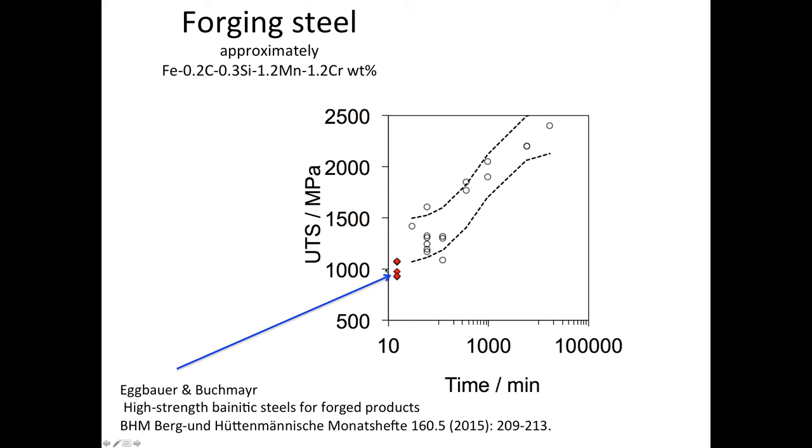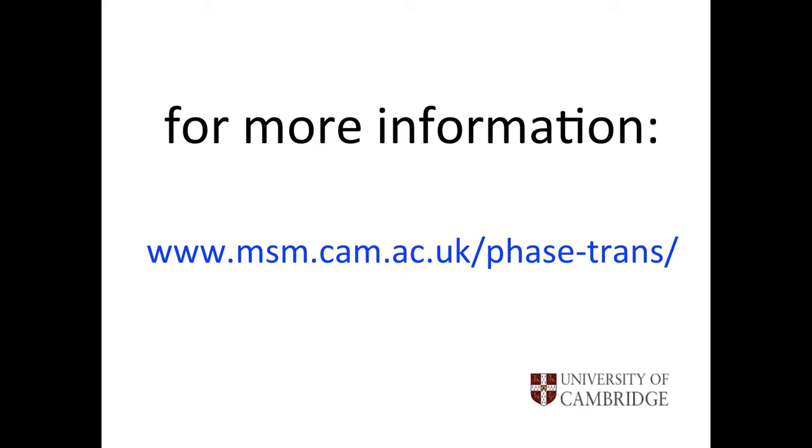So basically, when attempting to design a new TRIP-assisted steel or a steel consisting only of bainitic ferrite and retained austenite, curves of this kind can help you define the transformation conditions and the properties that might be achieved so that you can implement your design very rapidly. There are more details on this website. Thank you.